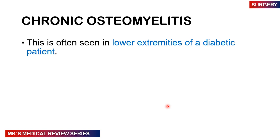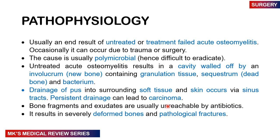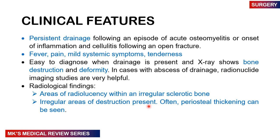Chronic osteomyelitis is very common in the lower extremities of diabetic patients. It usually results from untreated or poorly treated acute osteomyelitis, and occasionally from trauma or surgery, with a polymicrobial etiology. The cavity is walled off by an involucrum — new bone containing granulation tissue, sequestrum (dead bone), and bacteria. Draining pus in surrounding soft tissue and skin may form sinus tracts, and persistent drainage can even lead to carcinomas. Bone fragments and exudates are unreachable by antibiotics, resulting in severely deformed bones and pathological fractures.